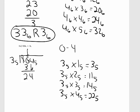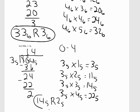Bring down the next number, which is a 4. How many times does 3 base 5 go into 24 base 5? That is 4. 4 base 5 times 3 base 5 is 22 base 5. Subtract, and that's 2. 3 does not divide into 2, so 2 is our remainder. So our answer here is 14 base 5, with a remainder of 2 base 5.